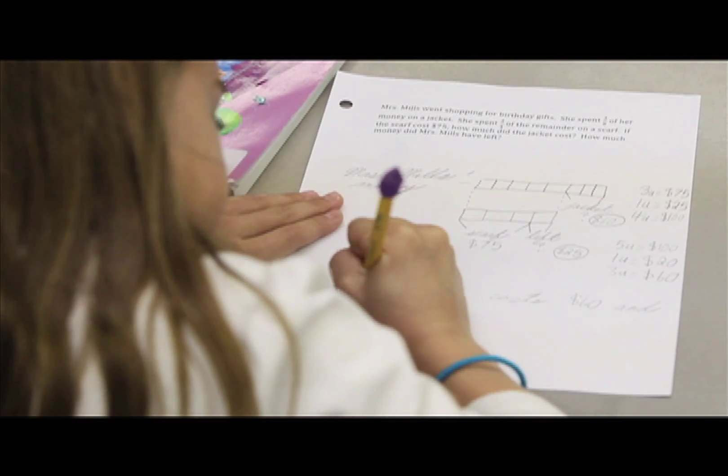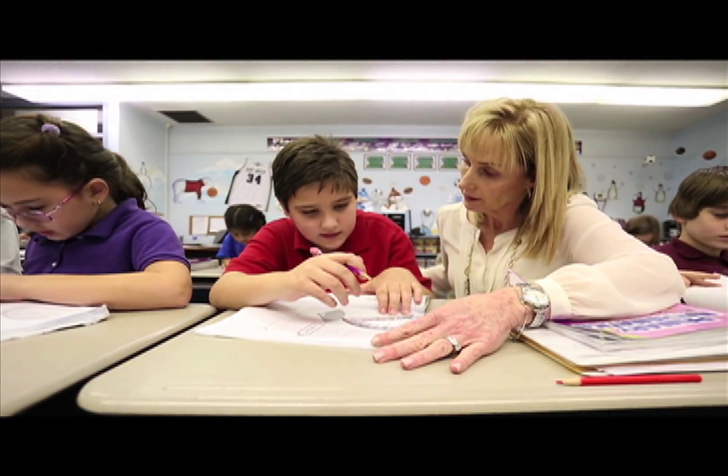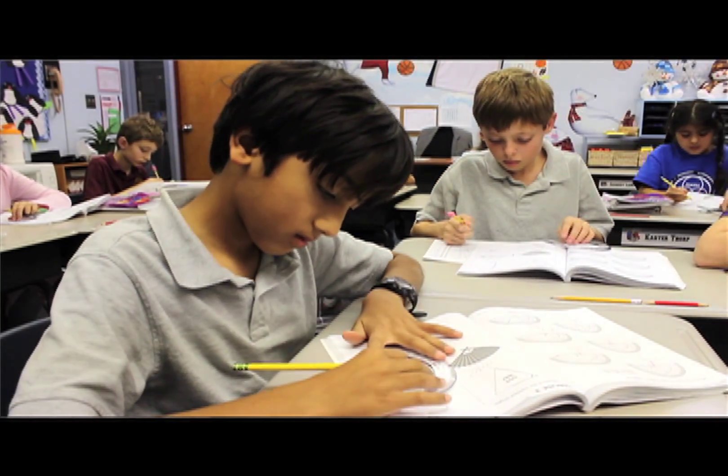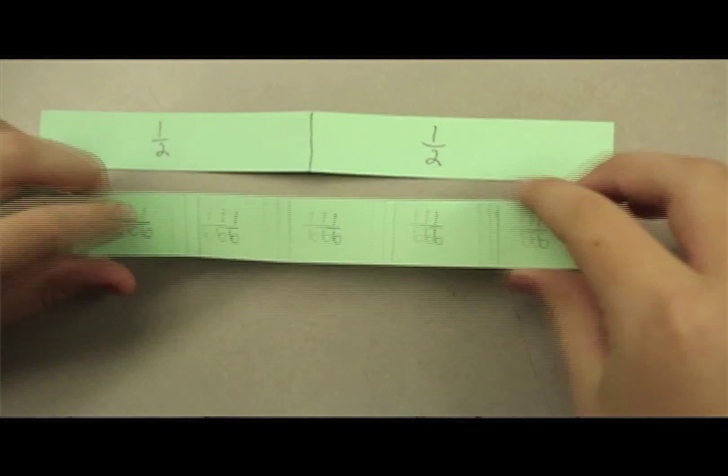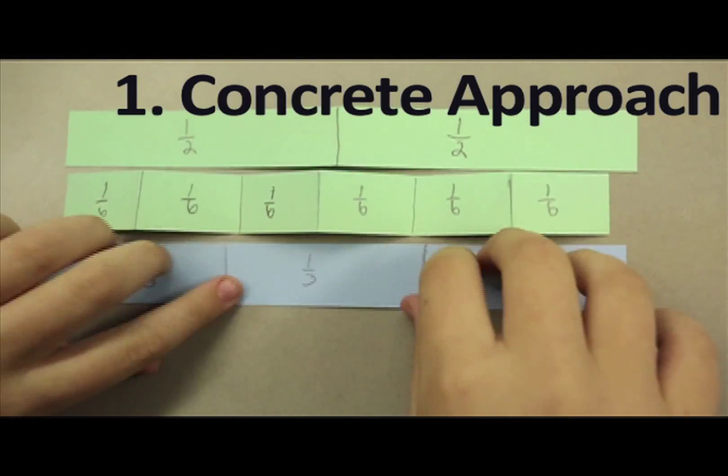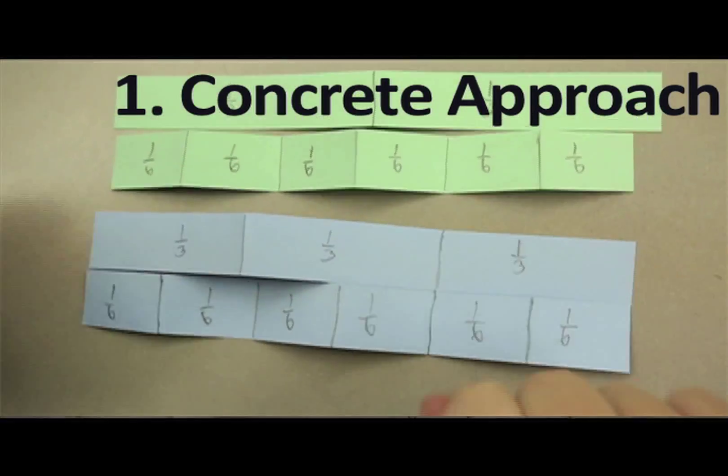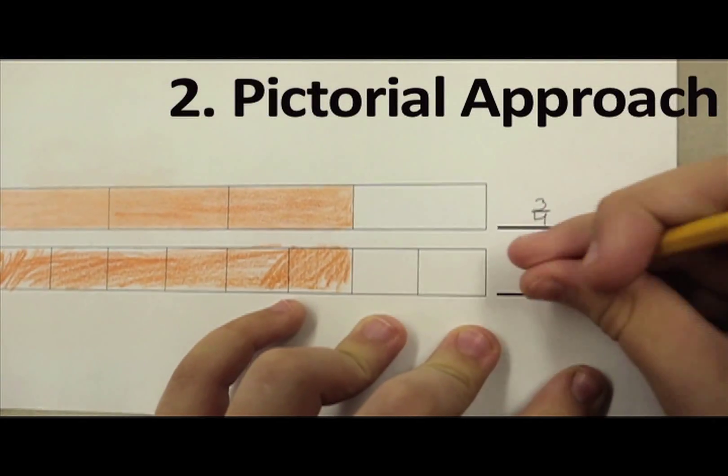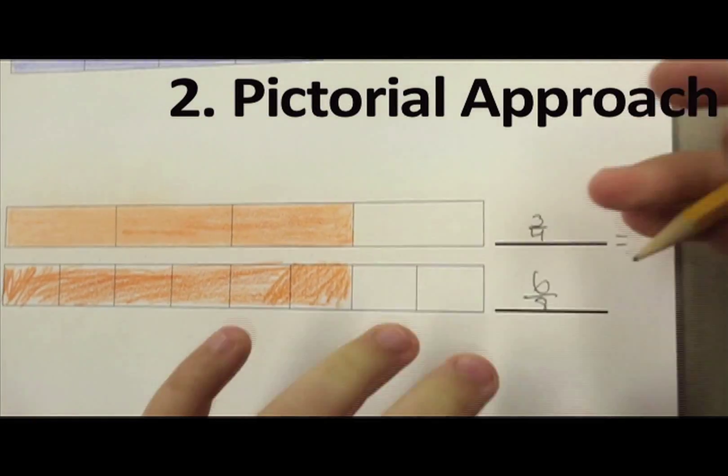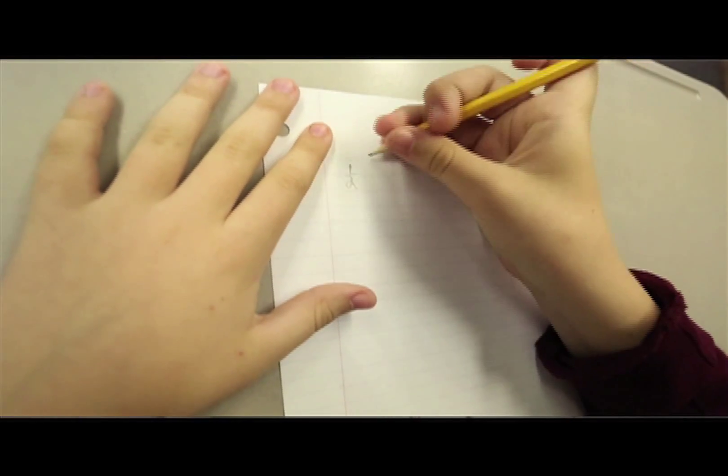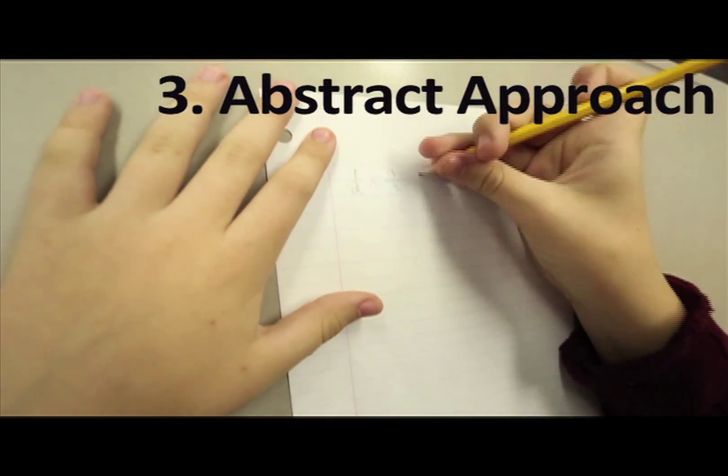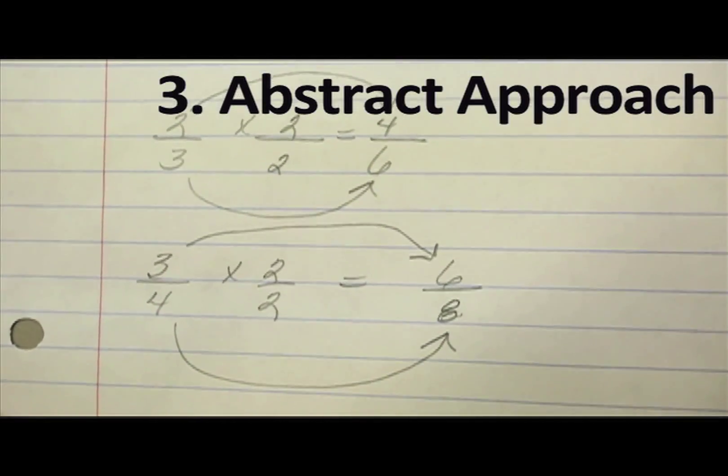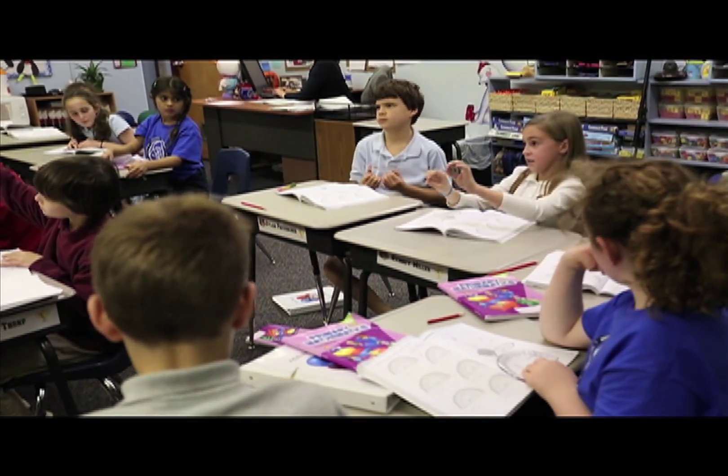Singapore math is the math that we teach in Oklahoma lower school and we like this method because it allows our students to first learn in a very concrete manner, and then our students move to a more pictorial approach, and then finally into an abstract approach. Singapore math builds on a conceptual understanding of math instead of focusing on rote rules.